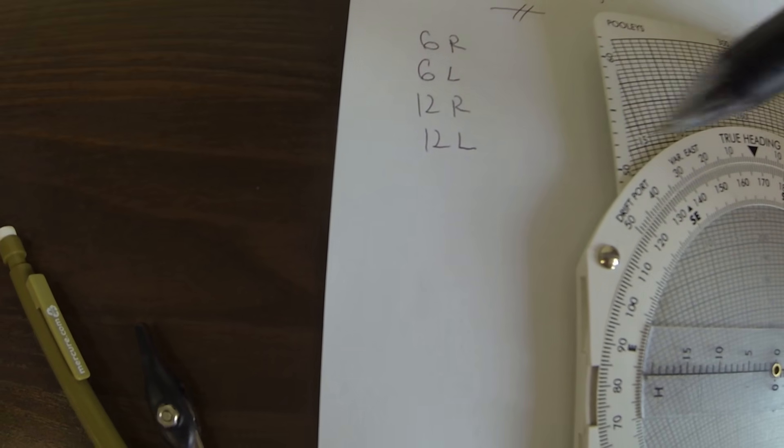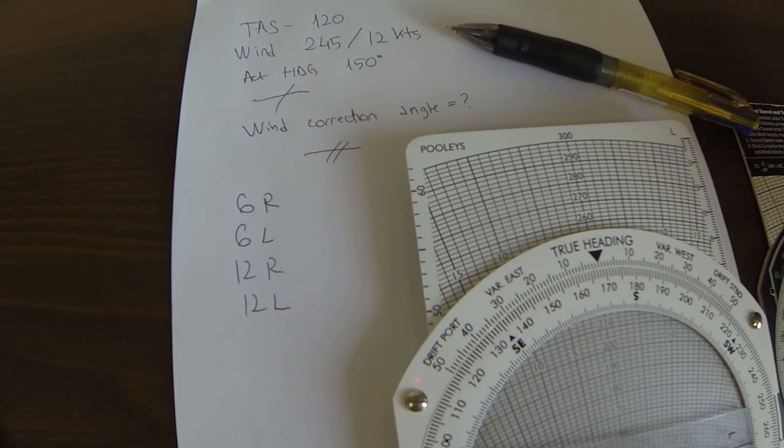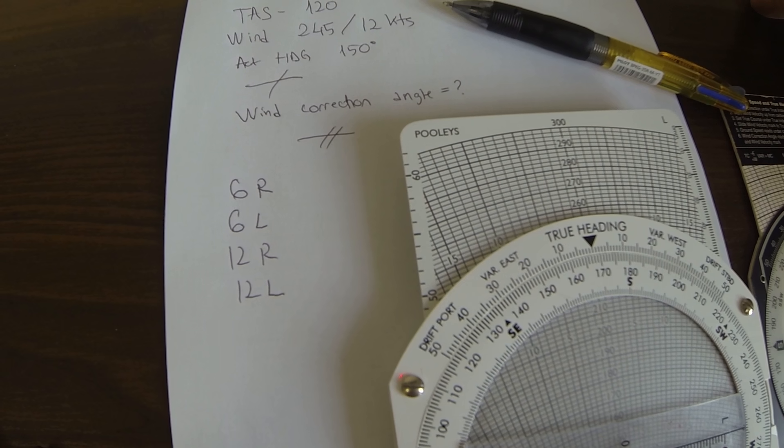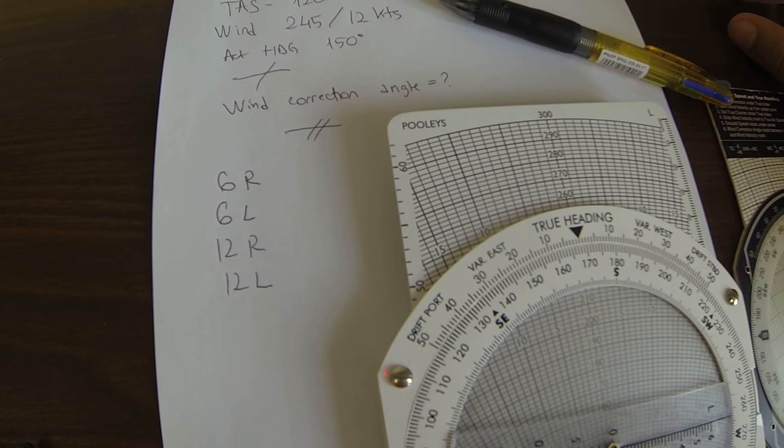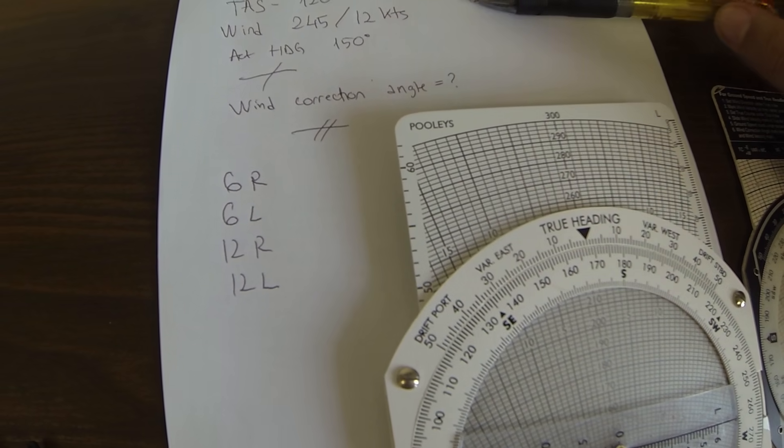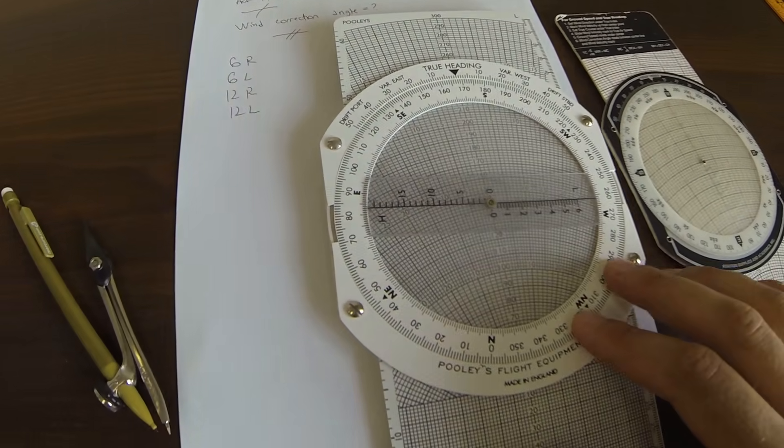I see the percentage for this, the statistics are very low. It's a very common mistake to make these mistakes between the wind correction and the drift. So let's use a CRP5 initially to solve this problem.